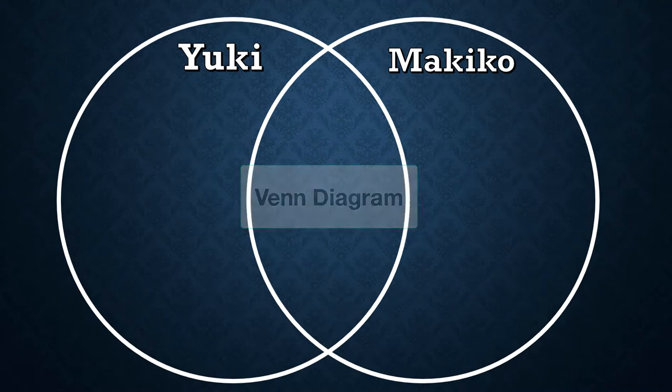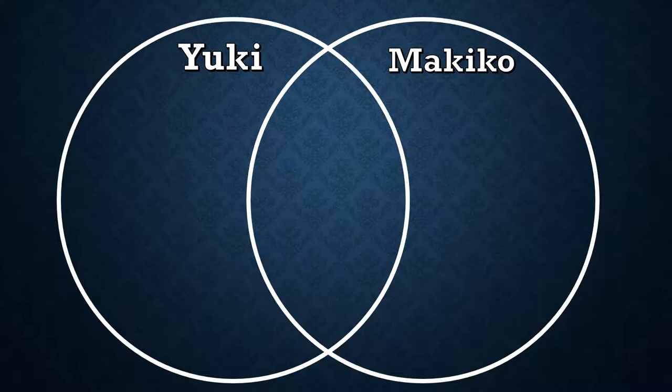Venn Diagram. Today we are going to take a look at how to complete a Venn Diagram. Within the Venn Diagram, you have two circles, and each circle has a name. The names represent what we are comparing and contrasting. The name can be at the top or bottom of the circle. For our demonstration today, we are going to compare and contrast Makiko with Yuki.